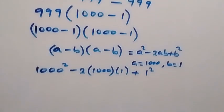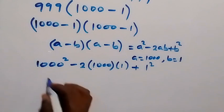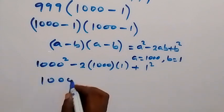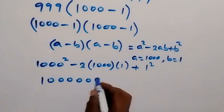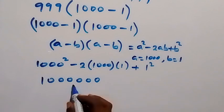And then 1000 squared from there will give us 1 million. So this will be 1 million. Then we have 2 times 1000 times 1, that's simply 2000. So this gives us 2000.